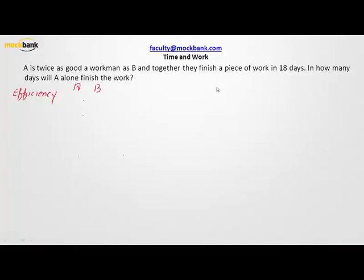Hi, welcome to the fifth video of time and work series brought to you by mockbank.com. In this problem it says that A is twice as good a workman as B and together they finish a piece of work in 18 days. What is being asked is in how many days A alone would be able to finish this entire work.